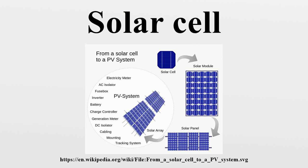The program was eventually taken over by the Energy Research and Development Administration, which was later merged into the U.S. Department of Energy. Following the 1973 oil crisis, oil companies used their higher profits to start solar firms, and were for decades the largest producers. Exxon, Arco, Shell, Amoco and Mobil all had major solar divisions during the 1970s and 1980s.